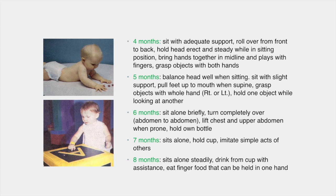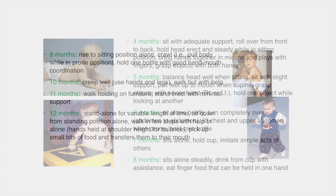At seven months, the infant can sit alone, hold a cup and imitate simple acts of others. At eight months, they sit alone steadily, drink from the cup with assistance and eat finger food held in one hand. From birth to eight months is a time of rapid growth and development which takes the child from a complete lack of independence to being able to independently occupy themselves, usually through play, and drink and eat independently, albeit with some thought regarding the size of food pieces and type of cup.